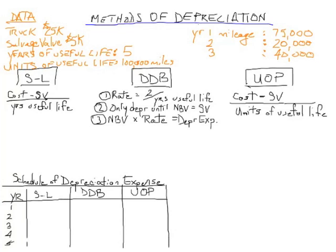The first one is straight line, the second is double declining balance, and the third is called the units of production method. At the top of the screen you see a bunch of orange data, these are givens, that we'll use in determining what our depreciation expense under all three methods will be.